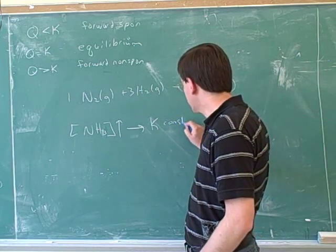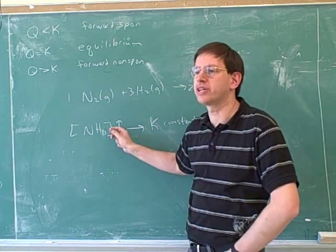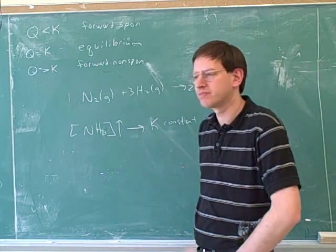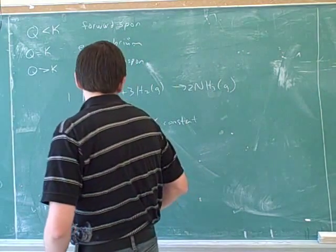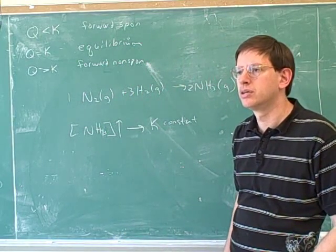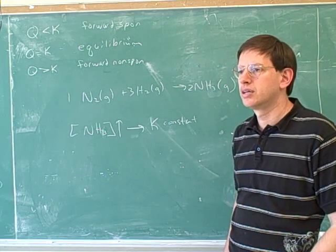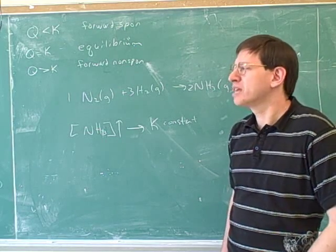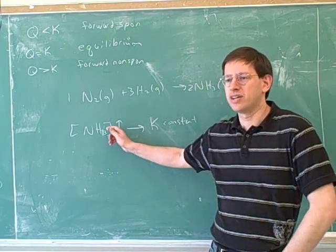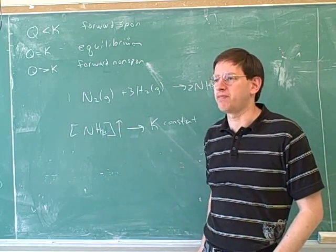K would be constant because K is not based on the actual concentration of ammonia. It's based on what the concentration would be at equilibrium, which we're not changing. So there's no reason for there to be an effect.